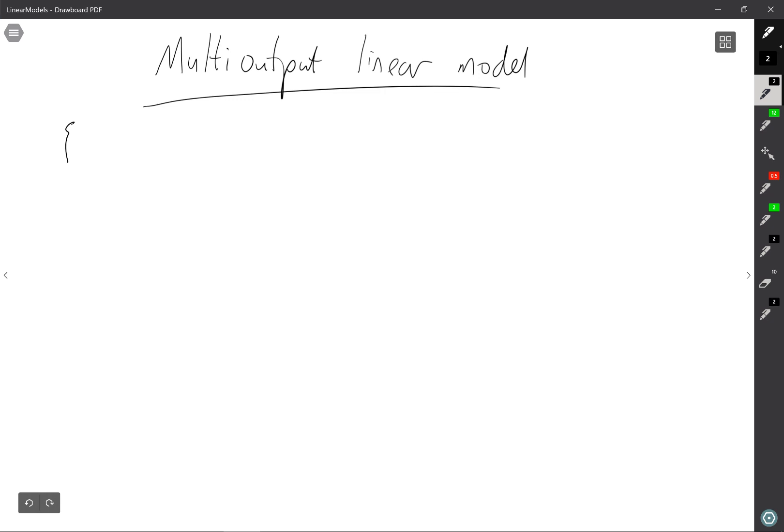So now we're going to discuss multi-output linear models. Just as before, we're going to have input-output pairs x1, y1 up to xn, yn. We're going to want to predict the y's from the x's. But in this section we're going to consider the case where the y's are also vectors. So let's suppose we've got the x's are in R^P, and the y's are in R^Q, so Q-dimensional outputs.